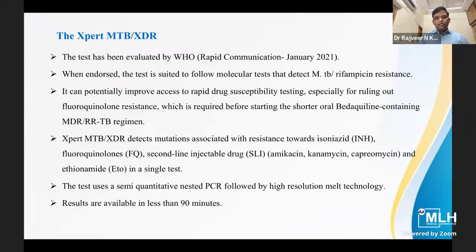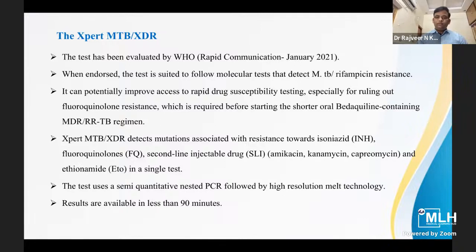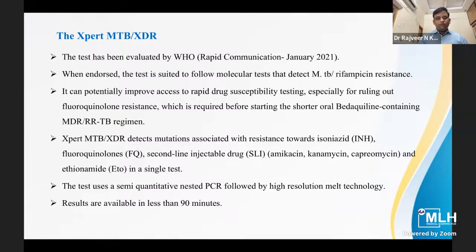The EXPERT MTB-XDR test was evaluated by WHO in Rapid Communications published in January 2021. When endorsed, the test is suited to follow molecular tests that detect Mycobacterium tuberculosis and Rifampicin resistance. It can improve access to rapid drug susceptibility testing, especially for ruling out fluoroquinolone resistance required before starting the shorter oral Bedaquiline-containing MDR and RR-TB regimens. It detects mutations associated with resistance to Isoniazid, fluoroquinolones, second-line injectable drugs like amikacin, kanamycin, capreomycin, and ethionamide in a single test. This test uses a semi-quantitative nested PCR followed by high-resolution melt technology, with results available in less than 90 minutes.